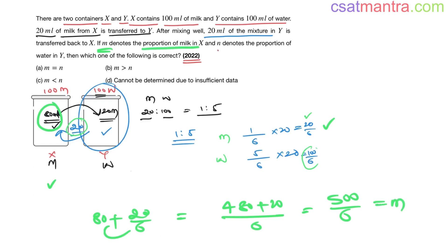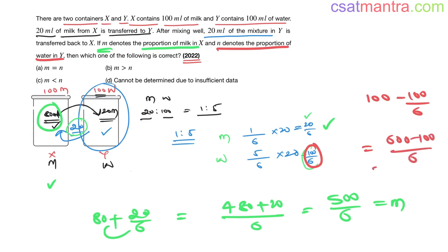N denotes the proportion of water in Y. Initially water in Y is 100 ml; 100/6 has been removed, so water in Y = 600/6 − 100/6 = 500/6. This is n. Since m = n = 500/6, the answer is A. Just because the question is lengthy doesn't mean it's difficult.